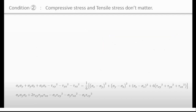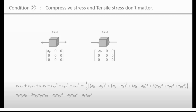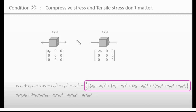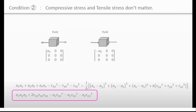The second condition is that compressive stress and tensile stress don't matter in the same way — if a material yields with a tensile stress of sigma-y, the same material will yield with a compressive stress of minus sigma-y. The second invariant function meets this condition because all variables are squared, so the sign cancels. However, the third invariant function does not meet this condition because the minus sign cannot be cancelled, so that function is eliminated.